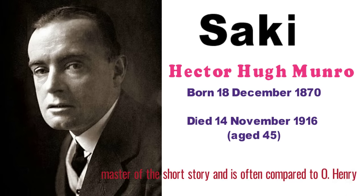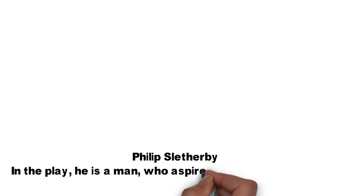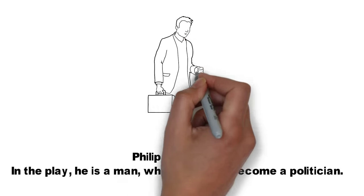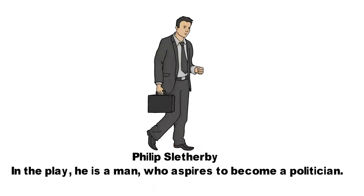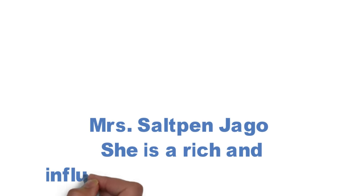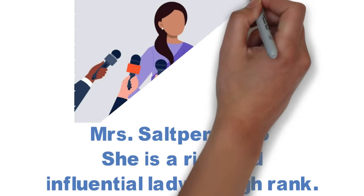You can see the important characters in the story. The first character is Philip Slithuby. He is a politician. The next character is Mrs. Salpanjago.